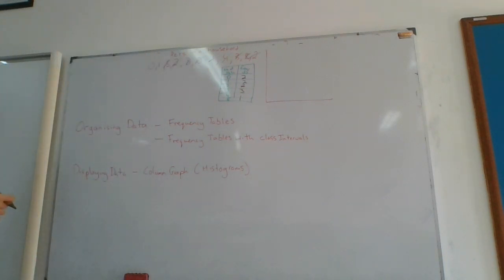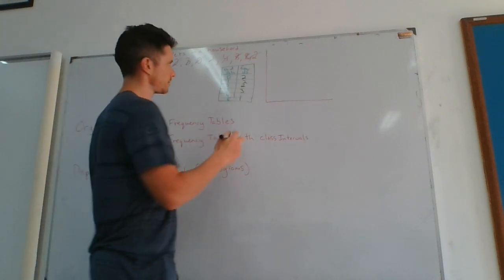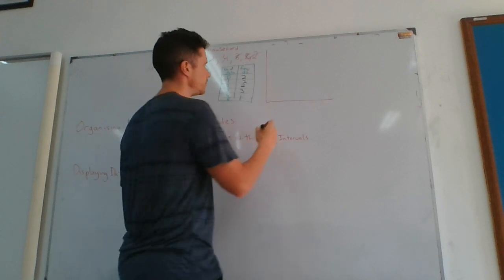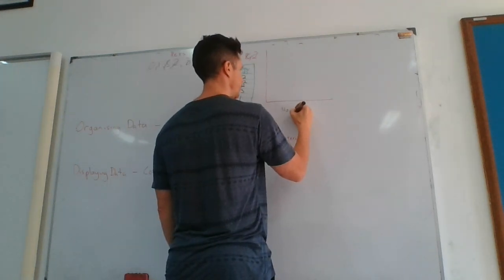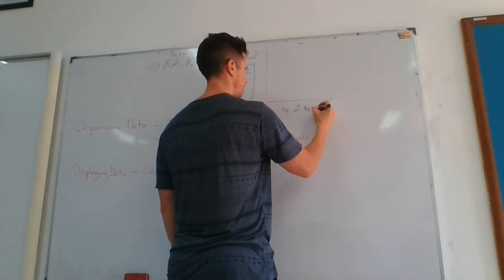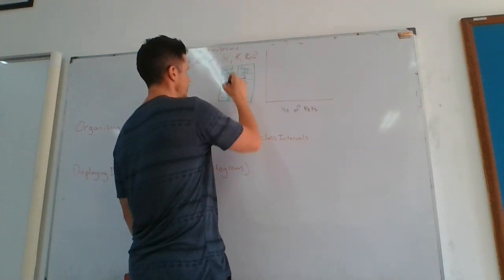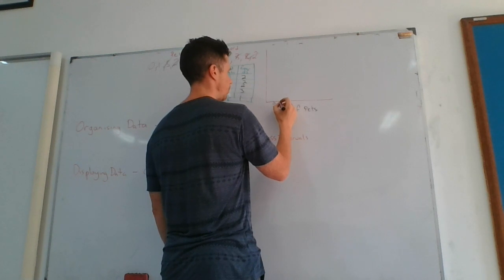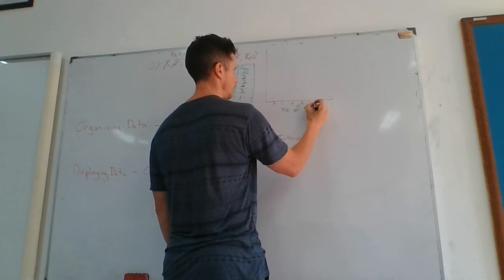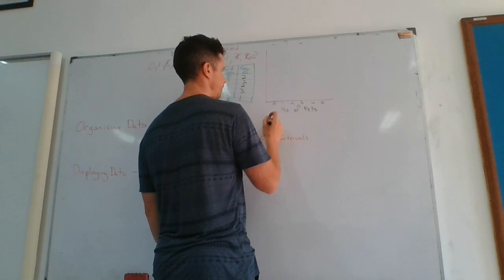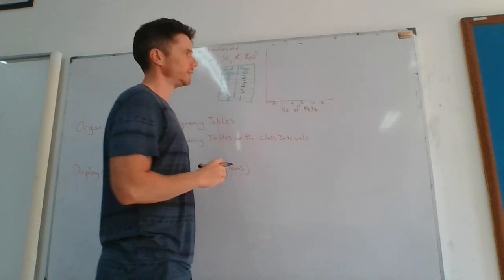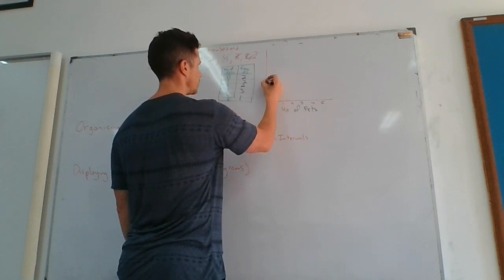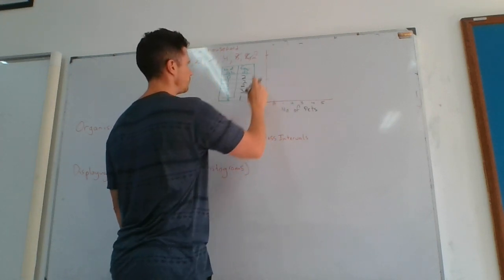On the x-axis is going to be the number of pets, so this one, the one that goes up steadily. So number of pets. So there's six options from zero, one, two, three, four, and five.